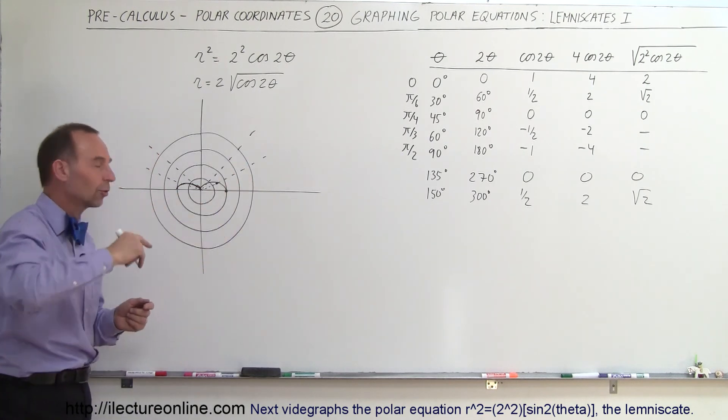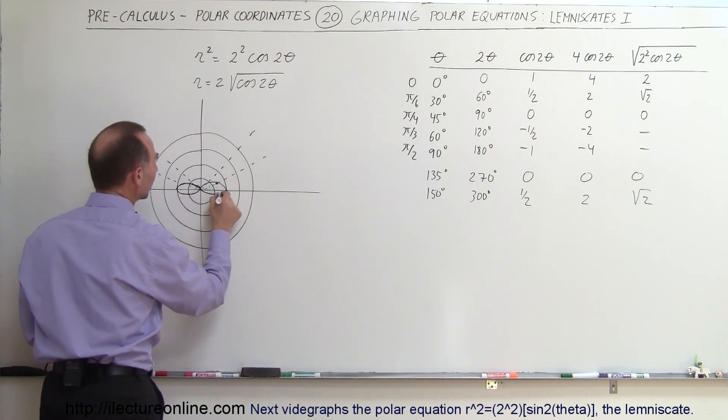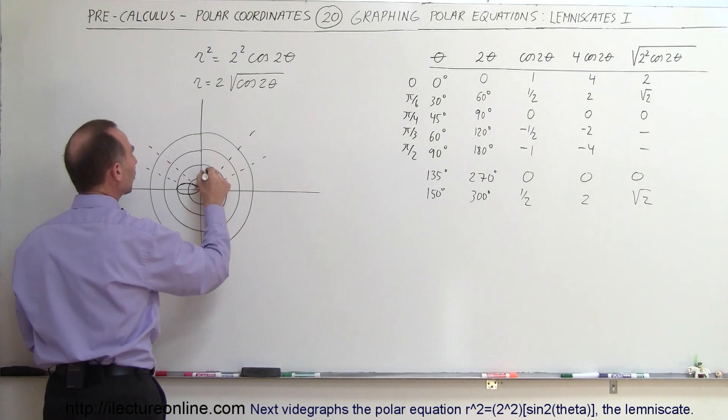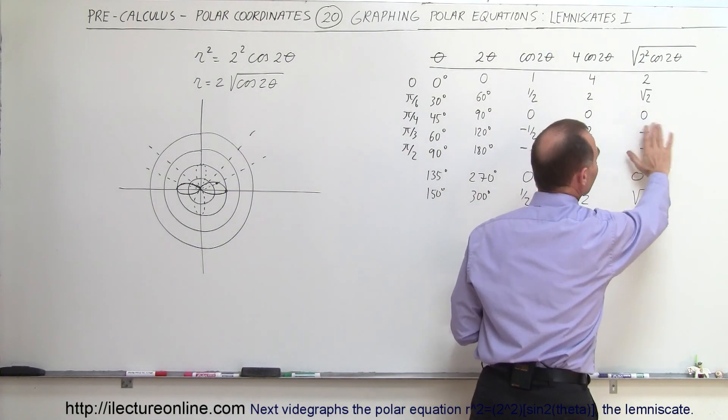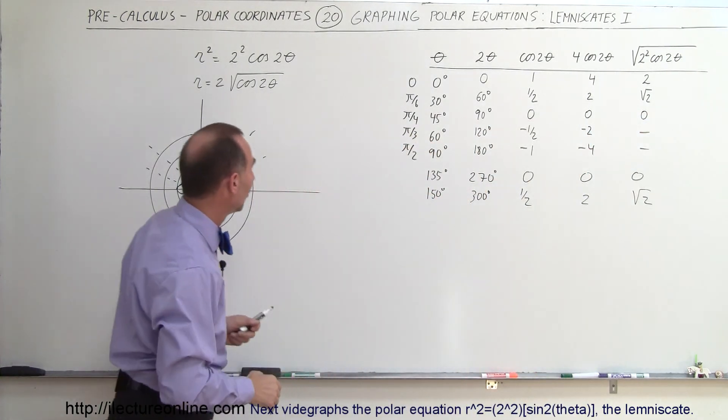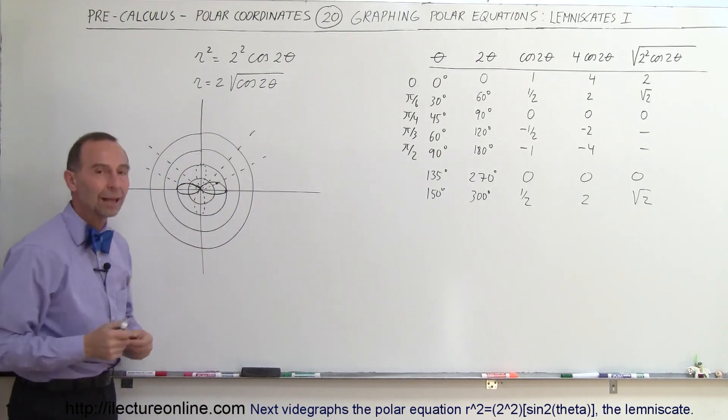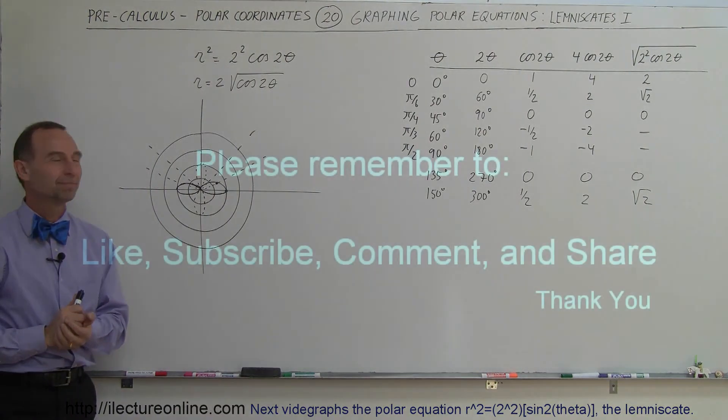If we continue going all the way around the circle, notice that this then will be completed this way, and this one will be completed this way, so we kind of have like a figure 8, and this portion of the curve, and this portion of the curve is not an allowable curve, because that would be gained by getting the square root of a negative number, so those values are not allowed. So in this case, we get something that looks like this, a figure 8, and we'll call them lemniscates, and that's how we graph them. Thank you.